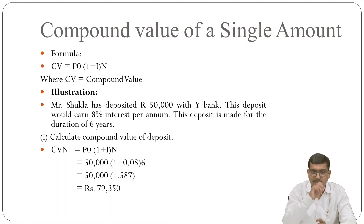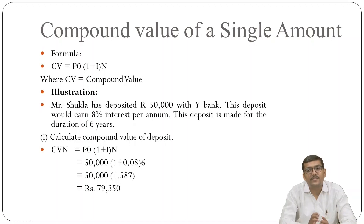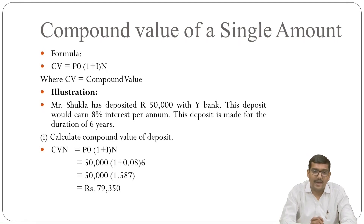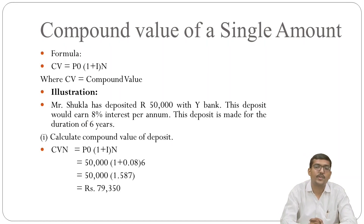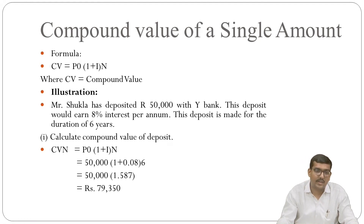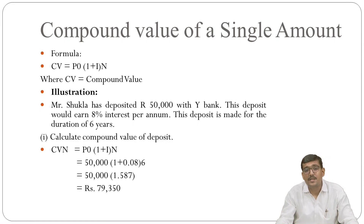We begin with the compounded value of a single amount. The formula is: Compounded Value (CV) = P₀ × (1 + i)ⁿ, where CV is the compounded value. Let us examine it with an illustration. Mr. Shukla has deposited ₹50,000 with Y Bank. This deposit earns 8% interest per annum for a duration of 6 years. So here n = 6, i = 0.08, and P₀ = ₹50,000.